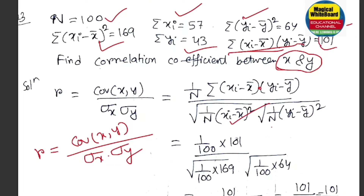Let's take a calculator. I have already done all values. Similarly, 1 by 100 into (Xi minus X-bar) whole square equals 169. Similarly, 1 by 100 into (Yi minus Y-bar) whole square equals 64.